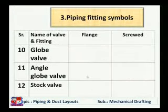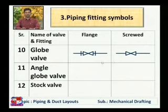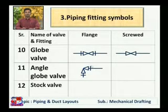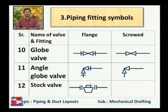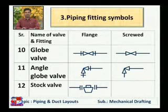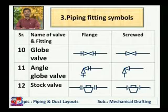The globe valve symbol — for a flanged connection two lines are drawn and for a screwed connection the lines are removed. The angle globe valve may be at 90 degrees or any other angle; two lines drawn at the end indicate a flanged connection, while a screwed connection has the two lines trimmed. The stroke valve symbol is also specific to it; in a pipeline diagram just the symbol is drawn and we must interpret that a stroke valve is placed there. Flanged stroke valve has two lines; screwed has one line at each end.